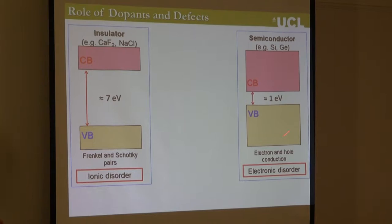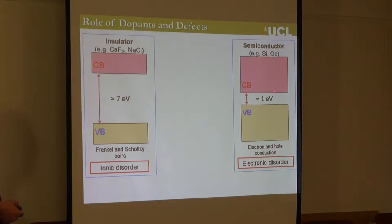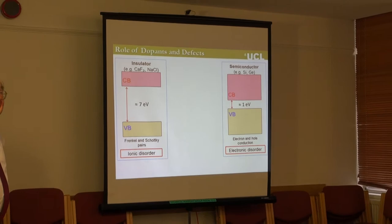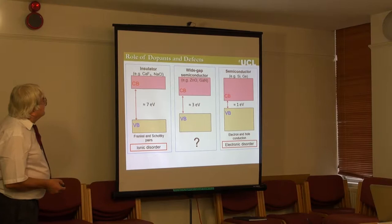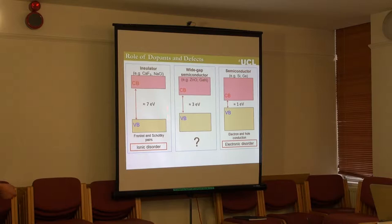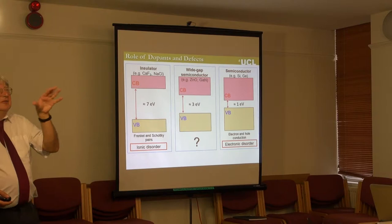If we look at a classic semiconductor such as silicon or germanium — narrow-bandgap systems — again there's no problem. If we dope them, we get electrons or holes as compensators. We all know from elementary condensed matter physics that if we dope silicon with phosphorus, we get electrons and an n-type material. So the big question is: what happens in the middle? If we've got a material like zinc oxide with an intermediate band gap, do we get ionic disorder or electronic?